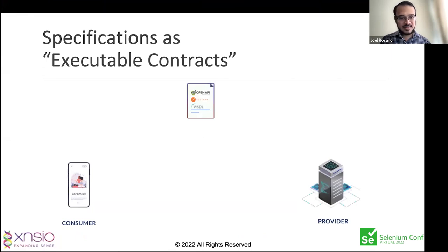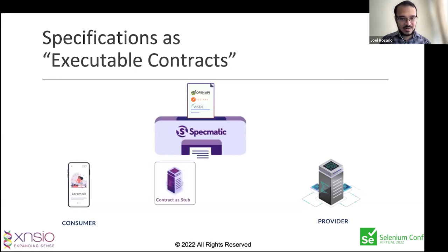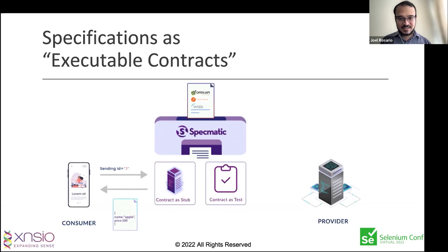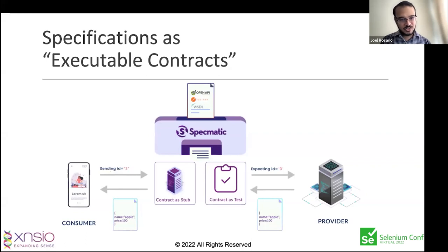This is how it typically works: the consumer and the provider have only the contract when they start off. The consumer starts on their local development environment — the laptop. The consumer doesn't have the provider running locally, but using the contract, we can faithfully simulate the provider. We pass the contract to Specmatic, which generates a contract-as-stub — a faithful, high-fidelity service visualization. Specmatic also generates contract-as-test, which allows the provider to run a high-fidelity simulation of the consumer.